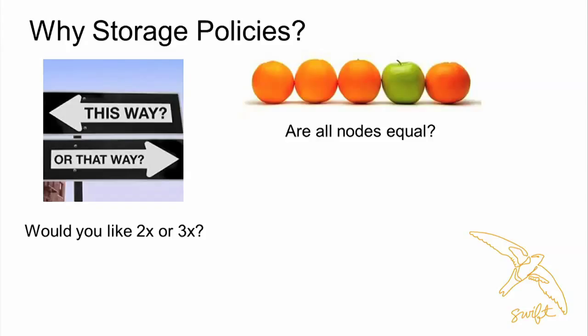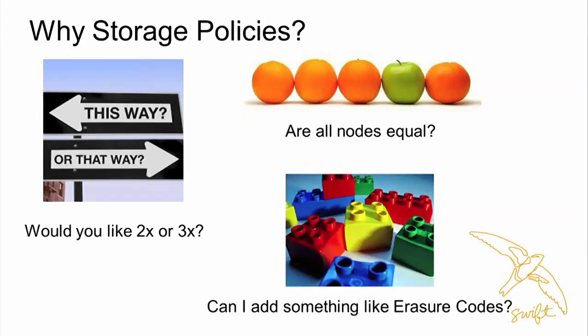Are all nodes equal? Most clusters, unless brand new, are not homogeneous. You've got some machines that are faster than others, some drives that are SSDs, some legacy stuff. Although you don't need to care which hard drive is in which system, sometimes you might want to. One example: today's Swift uses account and container databases on SSDs, but you can't use those SSDs for objects. What if you wanted to use them for objects? And what about adding something like erasure codes? Today it would be very difficult to bolt erasure codes into a replicated framework, but with storage policies we're building in the extensibility to do things like erasure codes.